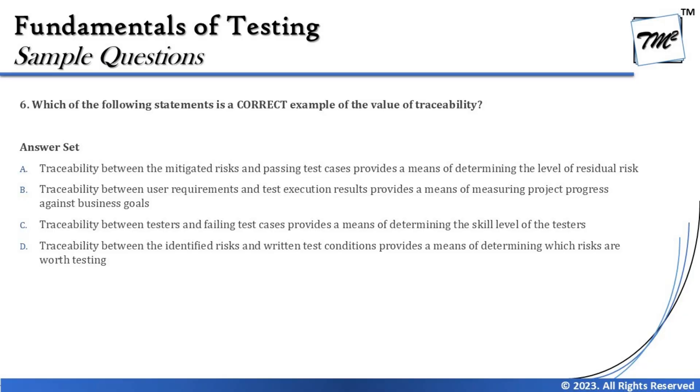For example, if a risk has five test cases to mitigate it and only three have been executed with all three passing, those three linked passing test cases don't give you the estimation of mitigated or residual risk, because there are still two more test cases to execute. You need all test cases linked to the risk — not just passing ones — to determine what is mitigated and what is remaining. So option A is not correct.